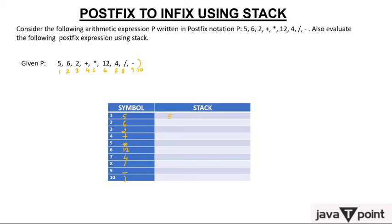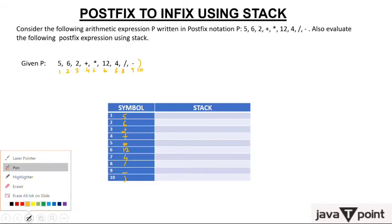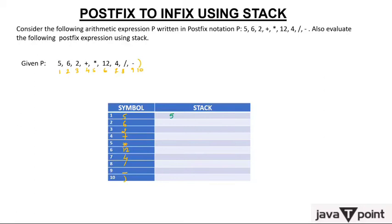Let me change the color for visibility. Starting the stack: you get 5 — push 5. Then 6 — stack has 5, 6, top is 6. Then 2 — stack has 5, 6, 2, top is 2. Now you get the + operator, so take out the top two operands: 6 and 2, put + between them: 6 + 2 = 8. Stack now has 5, 8.